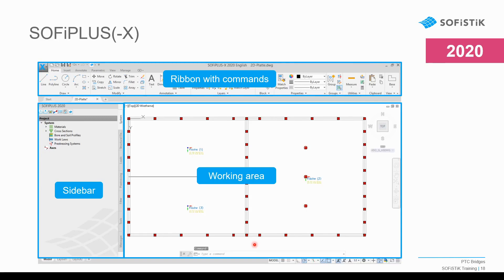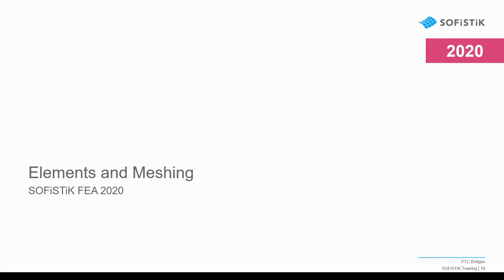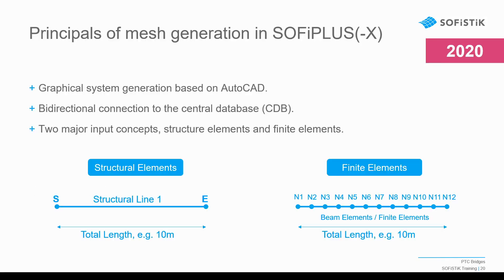This concludes the introduction of the SOFiSTiK programs. Now let's talk about elements and meshing in SOFiSTiK. The common workflow is to work in SOFiPLUS and create the model graphically using AutoCAD commands. In SOFiPLUS we work with structural elements: structural points, structural lines, and structural areas. We can export this information to the database or import it back — it's a bidirectional connection to the central database.